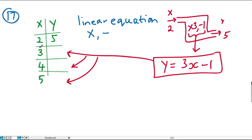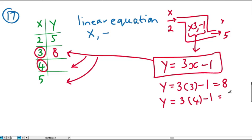Now we apply this for each of the other values. When x is 3, y equals 3 times 3 subtract 1, which is 8. When x is 4, y equals 3 times 4 subtract 1, which is 11. When x is 5, y equals 3 times 5 subtract 1, which is 14.